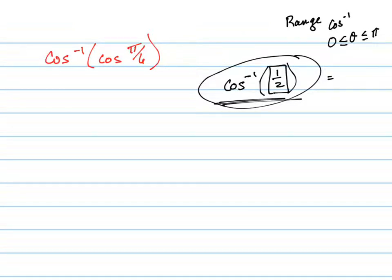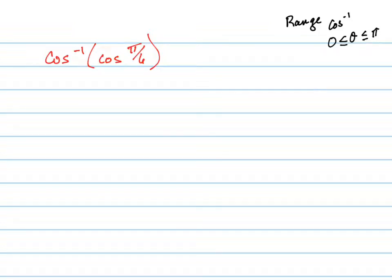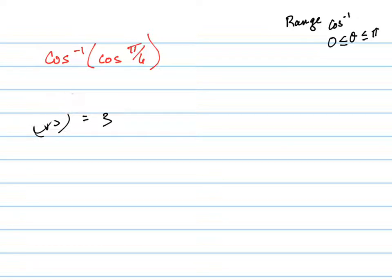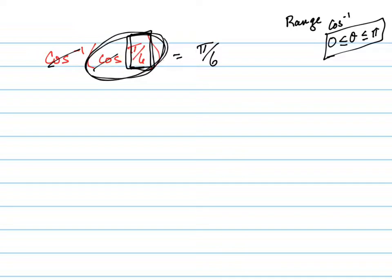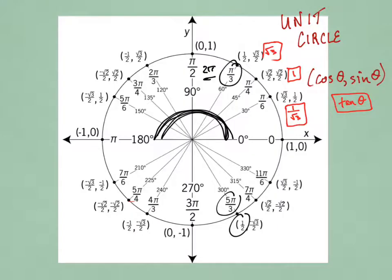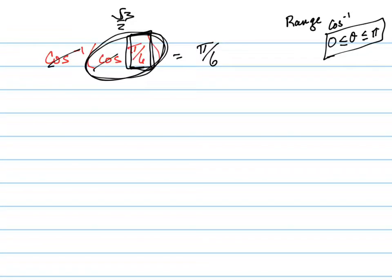To do this problem, remember these two functions are inverses of each other, so they kind of just undo each other — that's all that happens a lot of times. In this particular example, as long as your angle π/6 is included in the range 0 to π, these are just going to cancel each other out and you're done. So your answer is π/6. All this right here is a ratio — it actually happens to be root 3 over 2. So cosine inverse of root 3 over 2 is just π/6.